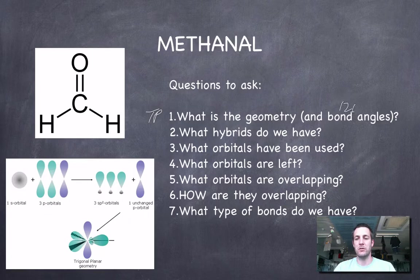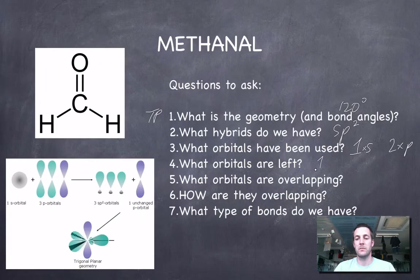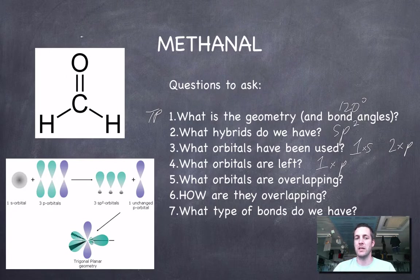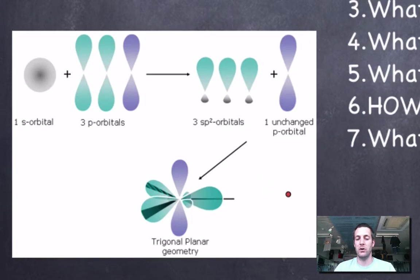If we've got 120-degree bond angles, that's a giveaway for sp2 hybrids. Carbon has used one s and two p orbitals to make them, leaving one p orbital unused. Oxygen is also using sp2 orbitals — it's mixed one s with two p orbitals, also leaving a leftover p orbital. If we draw the oxygen atom overlapping with the carbon atom, there's an sp2 hybrid on oxygen that can overlap end to end with the sp2 hybrid on carbon.